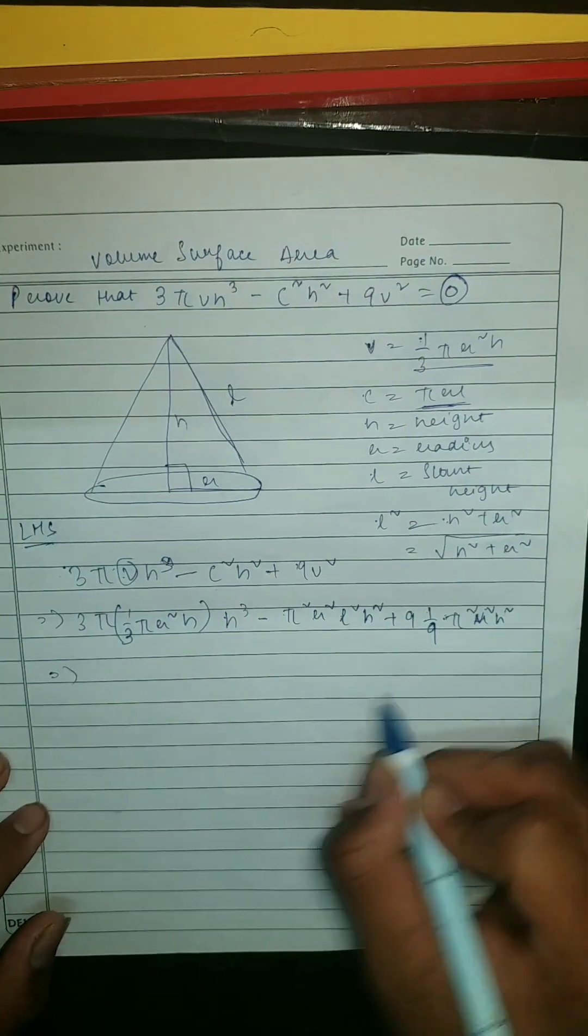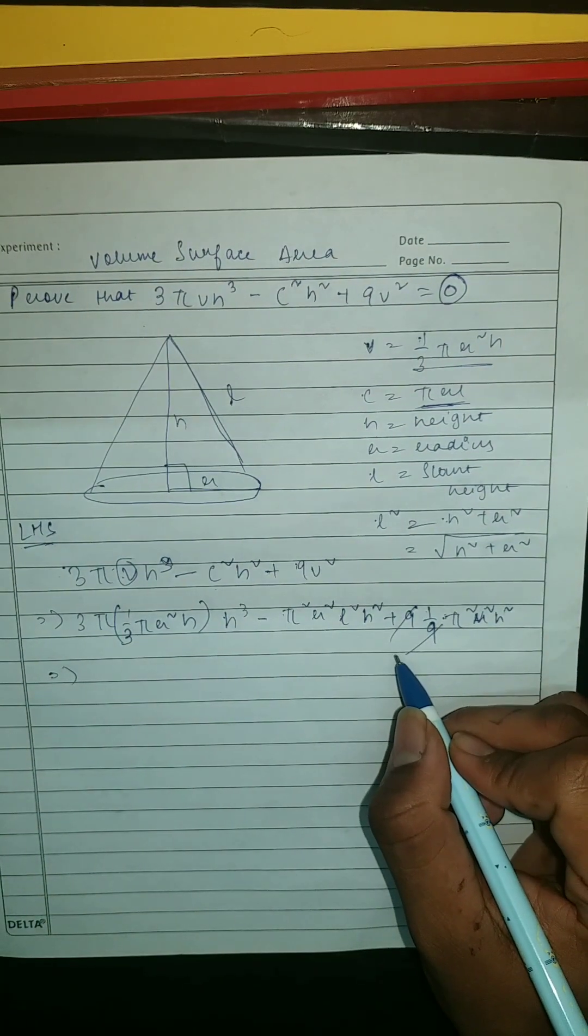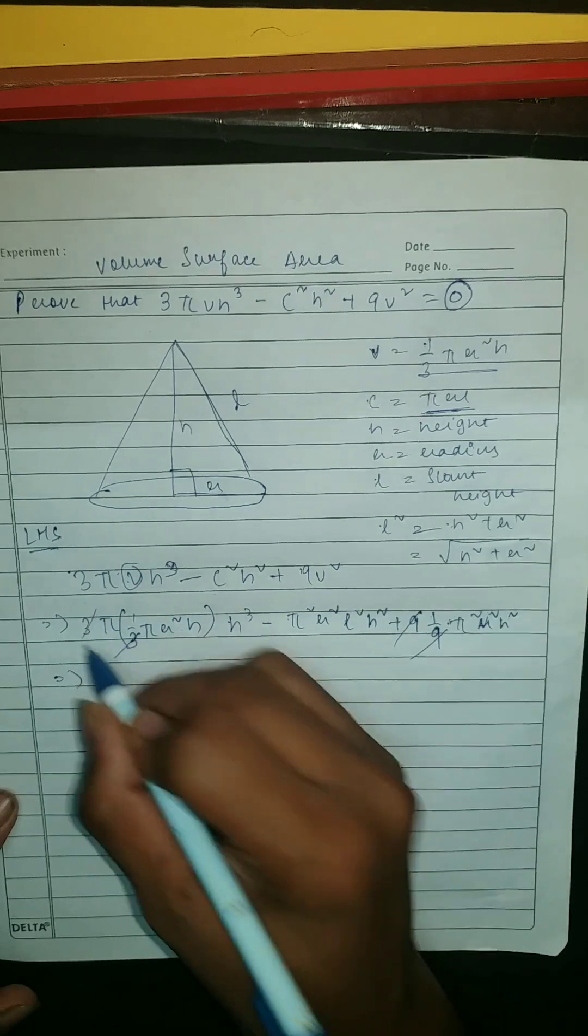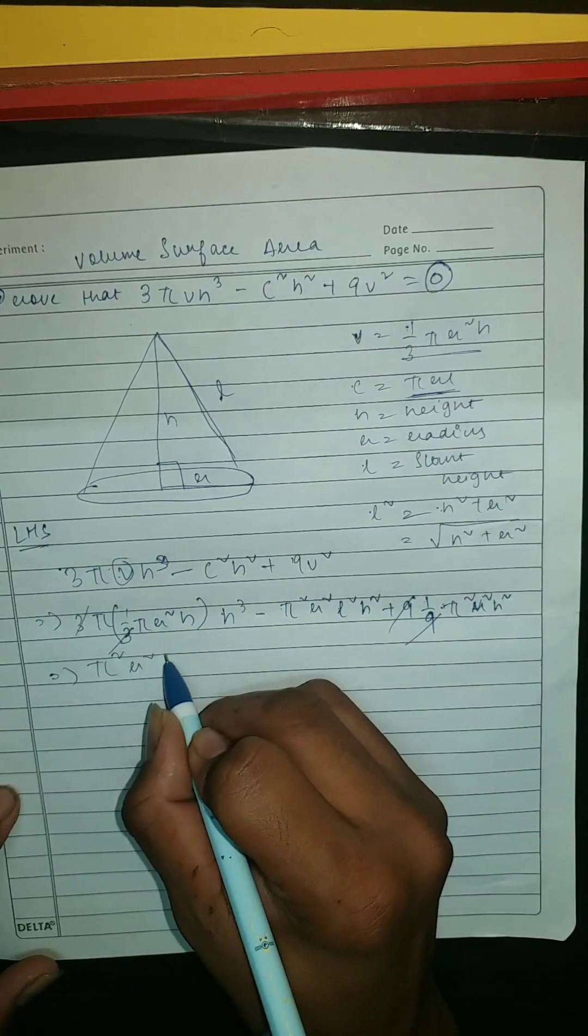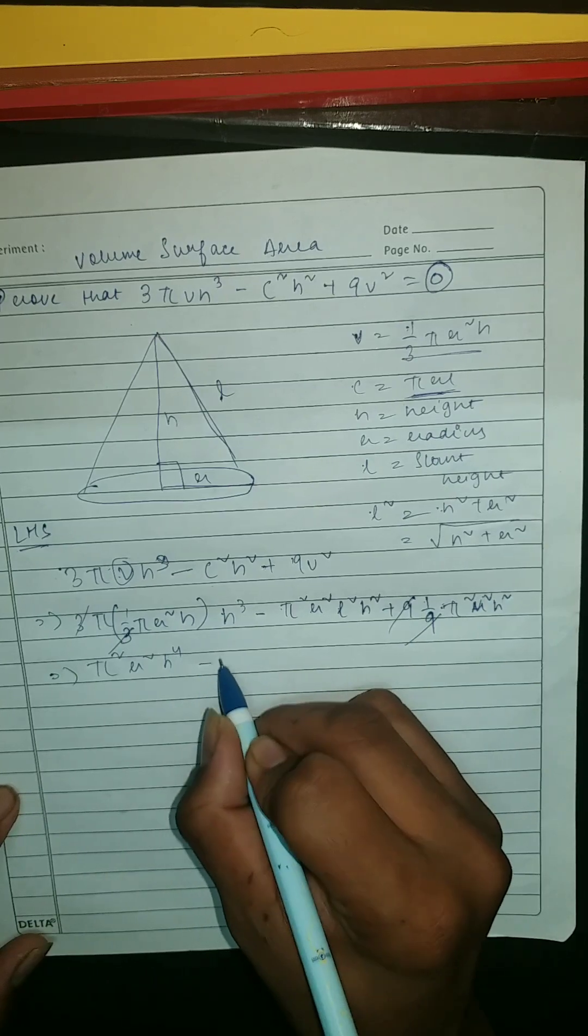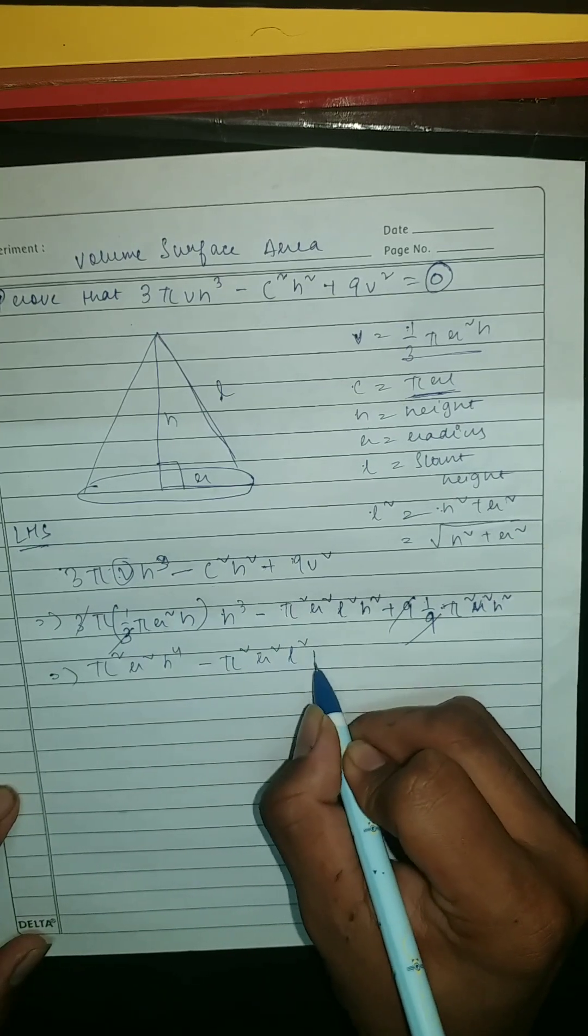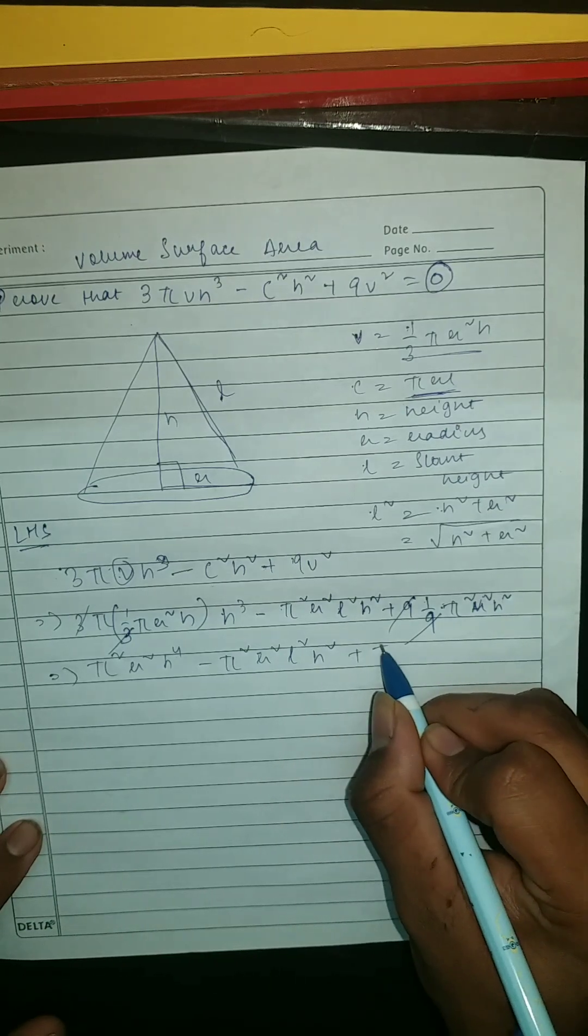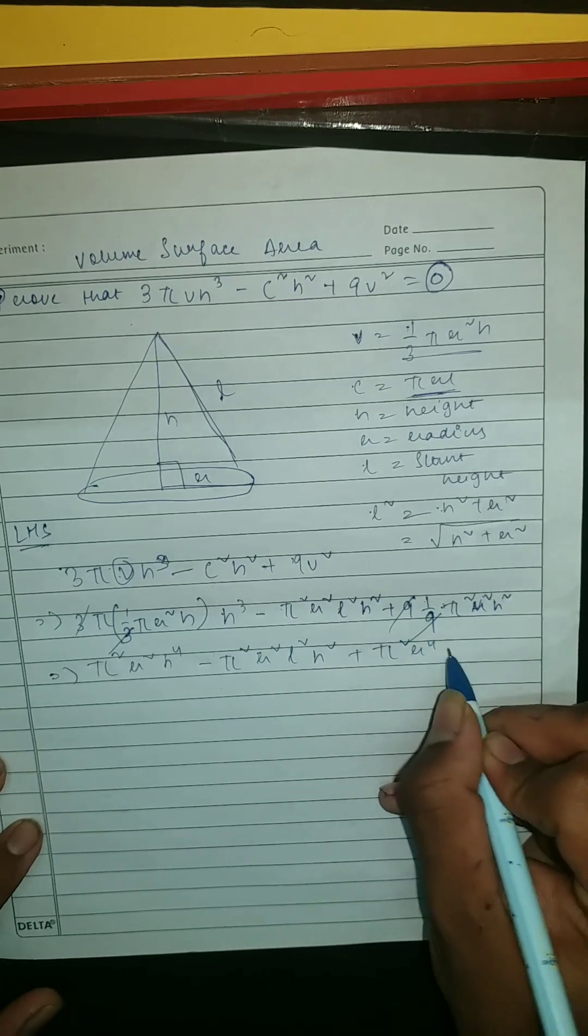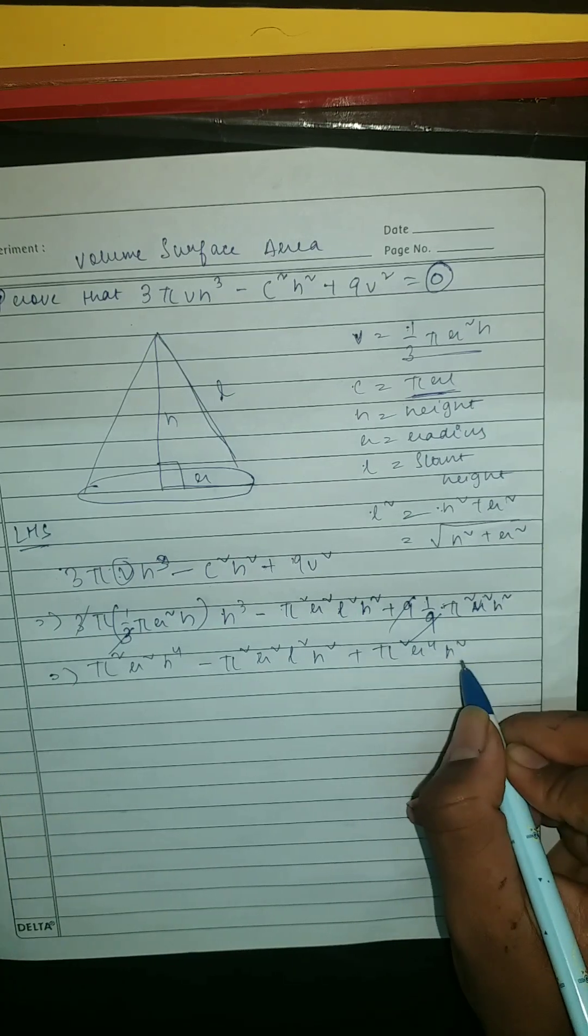Then what we're gonna do, we're gonna cancel this from here, then here cancel this. So we're left with π²r²h⁴ minus π²r²l²h². Then we are left with π²r⁴h².